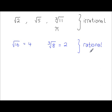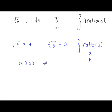Rational numbers, on the other hand, can be written as a fraction. So if you can write any number in the form of something divided by something — where both are whole numbers — then it is rational. For instance, 0.333... with the 3 recurring can be written as 1 divided by 3, so it is a rational number.